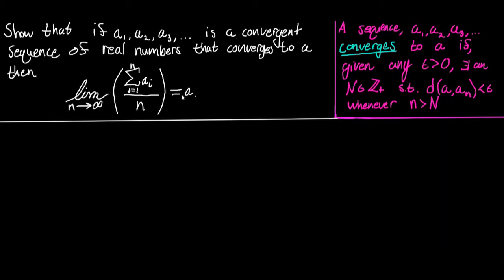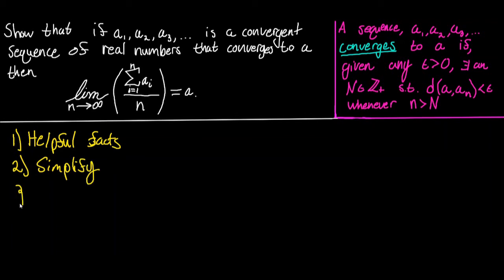We're going to split this proof up into three parts. In the first part, we're going to note down some helpful facts that are going to propel us forward. In the second part, we're going to make a series of simplifications that make the truth of the statement clearer. And finally, we're going to prove the statement.